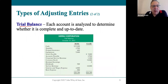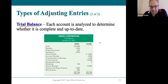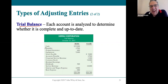Everything starts with the trial balance, which is basically the ledger in one organized form — all accounts and all balances from the general ledger. When it comes to a deferral, 'to defer' means to wait. In essence, you are waiting to recognize the revenue, and you are waiting to recognize the expense.